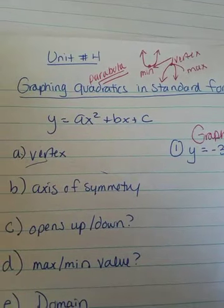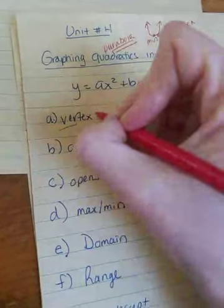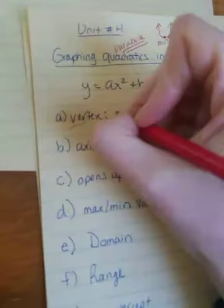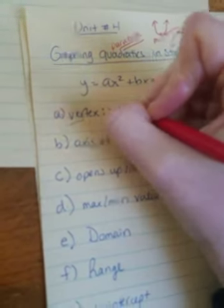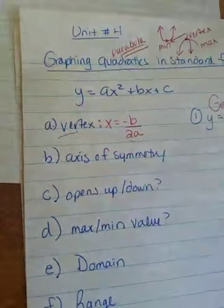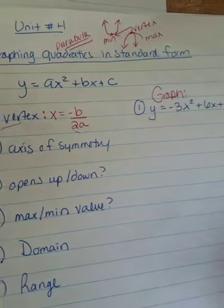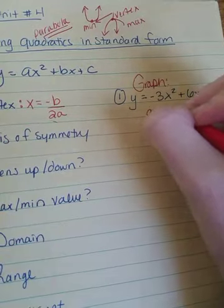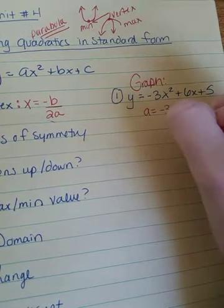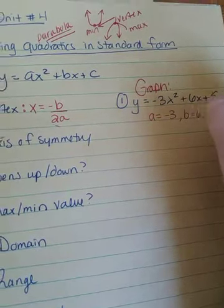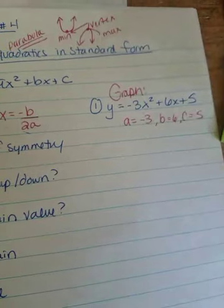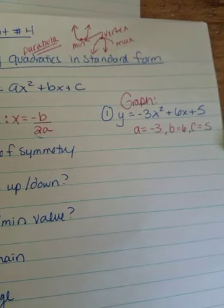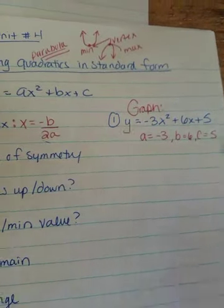And so, to find the vertex, we have an equation for you. I'm doing my work in red. If you can't tell, x equals negative b over 2a. And where does the b and the a come from? It comes from the equation I gave you. So, remember in this equation, a is negative 3, b is 6, and c is 5.